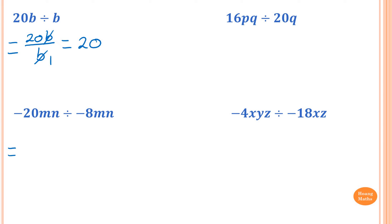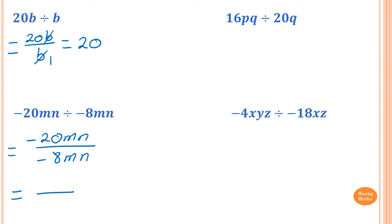Negative 20mn over negative 8mn. Negative divided by negative becomes positive. Cancel mn. 20 and 8 are both divisible by 4, so 20 divided by 4 is 5 and 8 divided by 4 is 2. So the answer is 5 over 2.